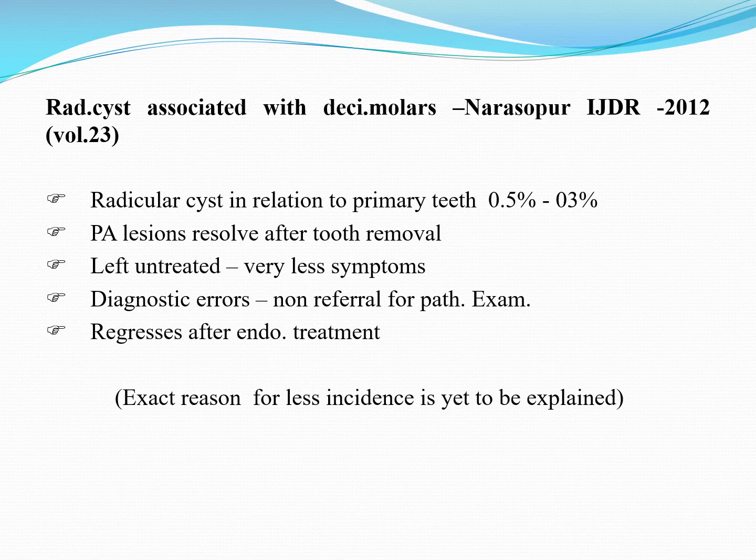If a deciduous tooth is removed, any associated periapical or radicular cyst usually resolves, so it goes unnoticed. Sometimes the radicular cyst in the deciduous dentition is simply not symptomatic, so it also goes unnoticed. Additionally, any periapical inflammation in relation to deciduous teeth usually resolves on its own because of the bone structure — the inflammation clears easily. For these reasons, radicular cysts are less commonly seen in the deciduous dentition.